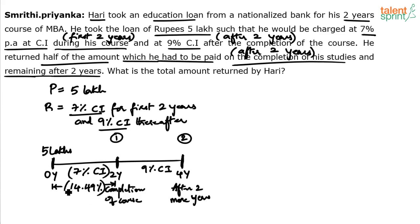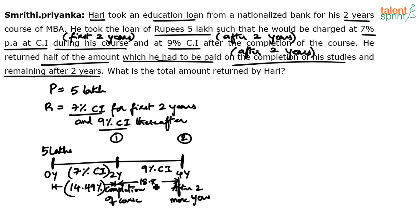This is the effective percentage concept discussed in the CI/compounding topic. From zero to two years, the rate of interest is 7% per annum compounding, so using A plus B plus AB by 100 with A=7 and B=7: 7+7+(7×7/100) = 14.49%. Similarly, in the next two years at 9% per annum, the total CI is 9+9+(9×9/100) = 18+0.81 = 18.81%. So in the first two years you are charged 14.49% interest, and in the second two years you are charged 18.81% interest.